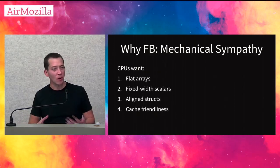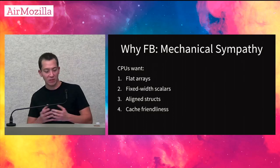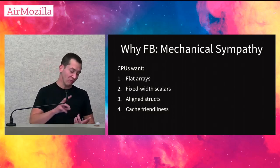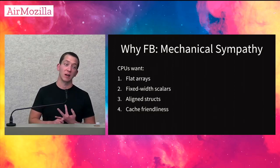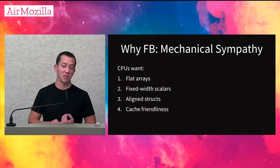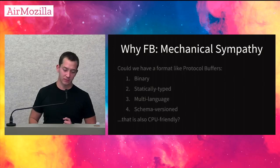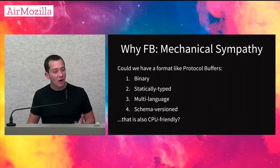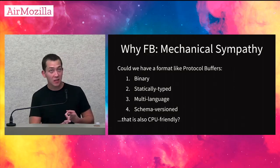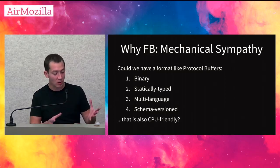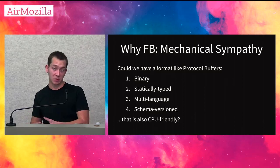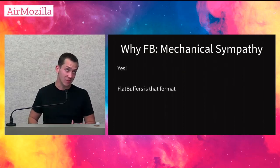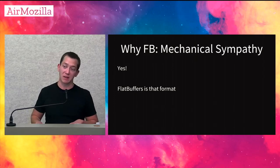I make the strong claim that slow software is our fault because the machines are extremely fast. The real speed limits are billions of CPU instructions per second, gigabytes of RAM access per second, hundreds of thousands of SSD IOs per second. If we aren't achieving that, that's our problem — not the hardware's. What do CPUs want? CPUs want flat array data, fixed-width scalars to fit in registers, aligned struct types, and data to be cache friendly — packed together.